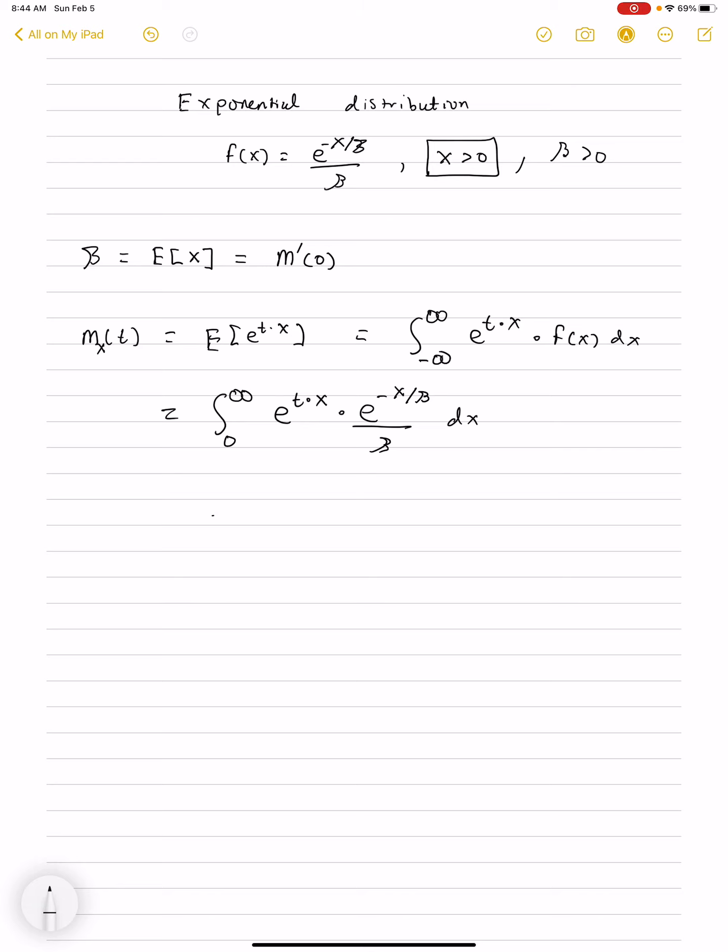Now beta being the mean is the expected value or the derivative of the moment generating function evaluated at 0. So let's calculate the moment generating function. By definition, the moment generating function is the expected value of e to the tx, and that means we integrate from minus infinity to infinity of e to the tx times the density f of x.